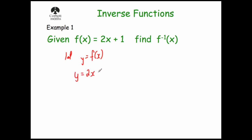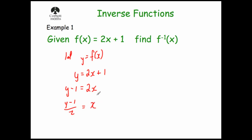So y = 2x + 1. Now if we make x the subject, that will give us the inverse function, because to go from x to y you multiply by 2 and add 1. So to go from y to x, we minus 1 from both sides: y − 1 = 2x, then divide both sides by 2.